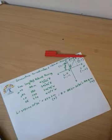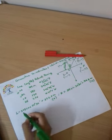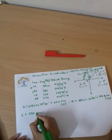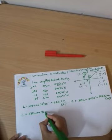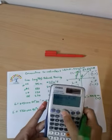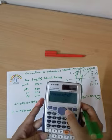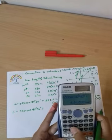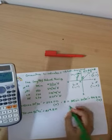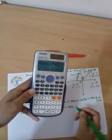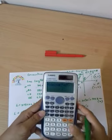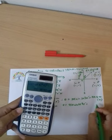Now let's go to traverse leg BC. The latitude equals 550·cos(42°42'), which equals 404.2 meters. The departure equals 550·sin(42°42'), which equals 372.98 meters.